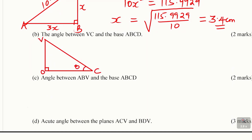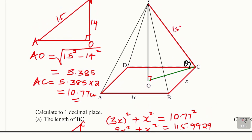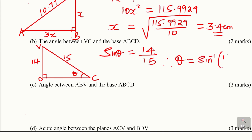VO is 14 and VC is 15. Using trigonometric ratios, sine of angle theta equals opposite over hypotenuse, which is 14 divided by 15. To get theta, take the sine inverse of 14 divided by 15, giving 68.96 degrees. Rounded to one decimal place, theta equals 69.0 degrees.